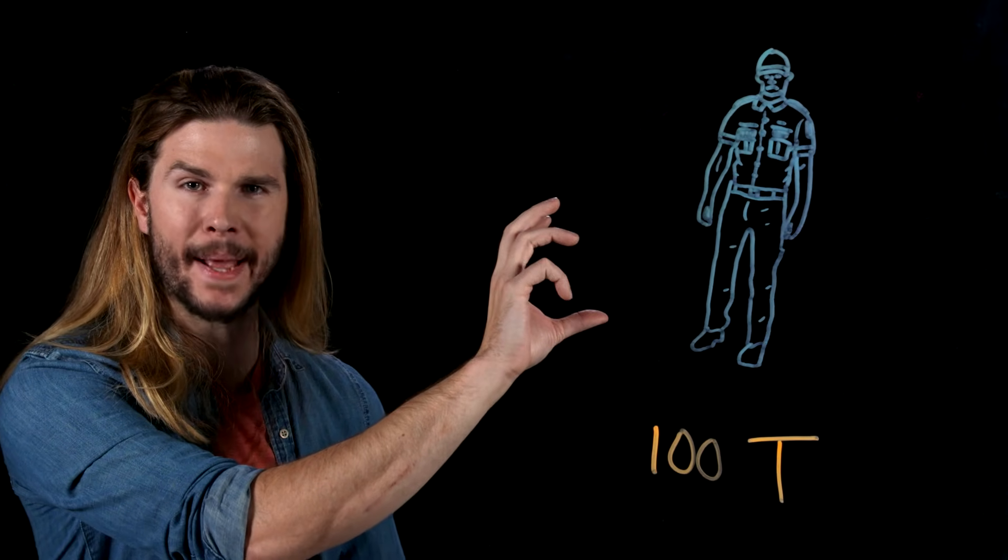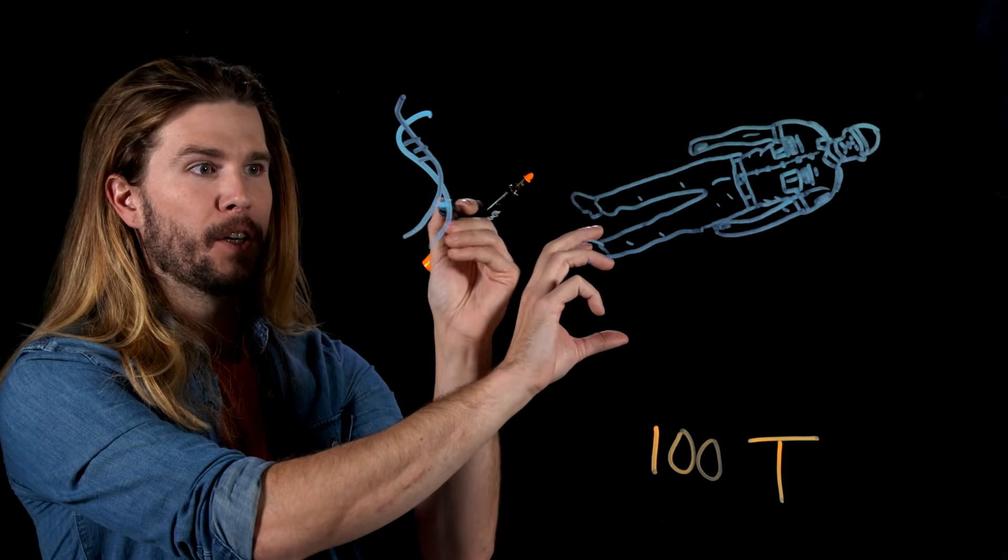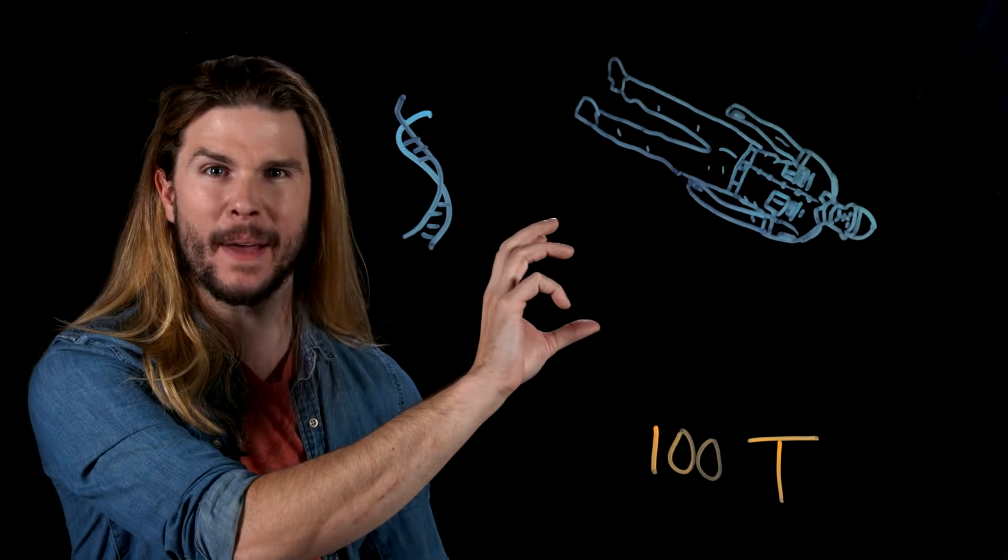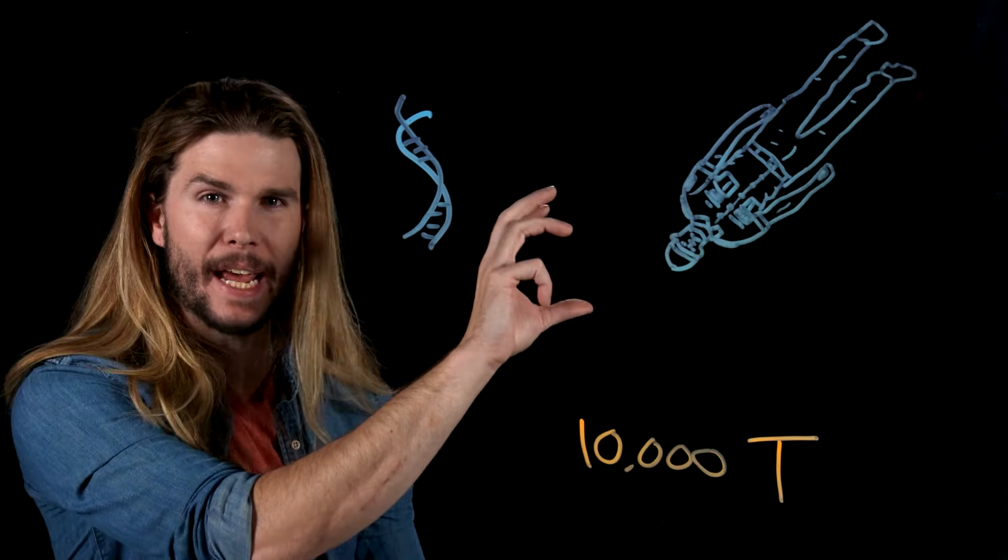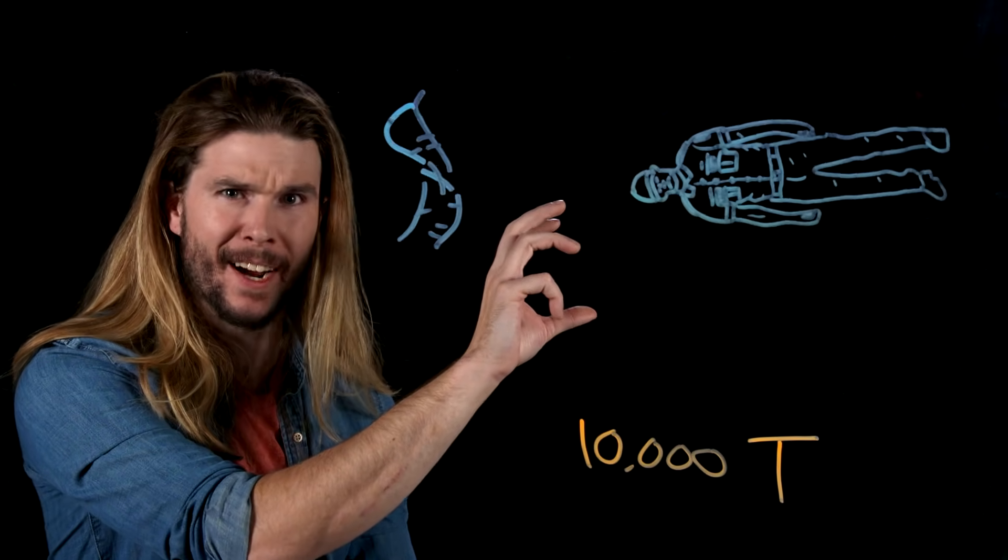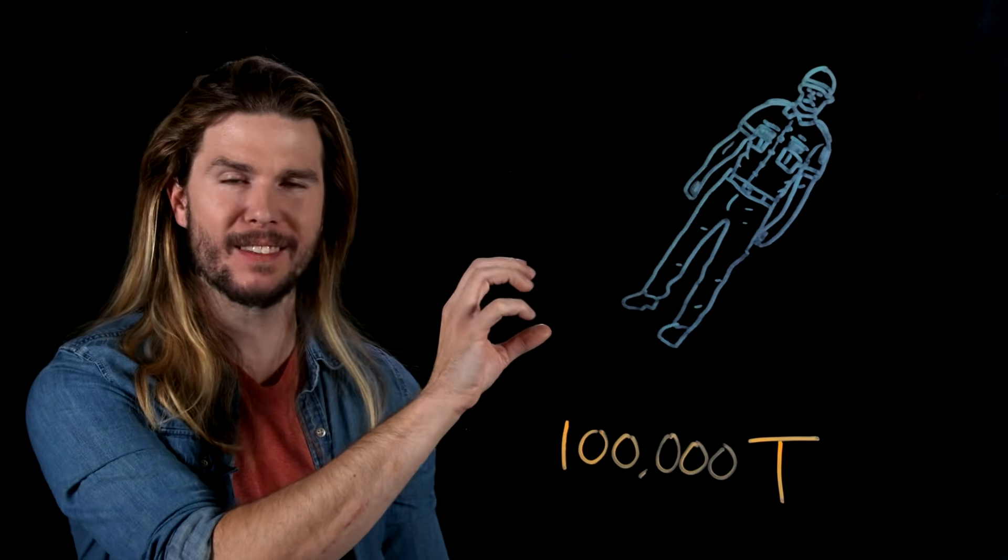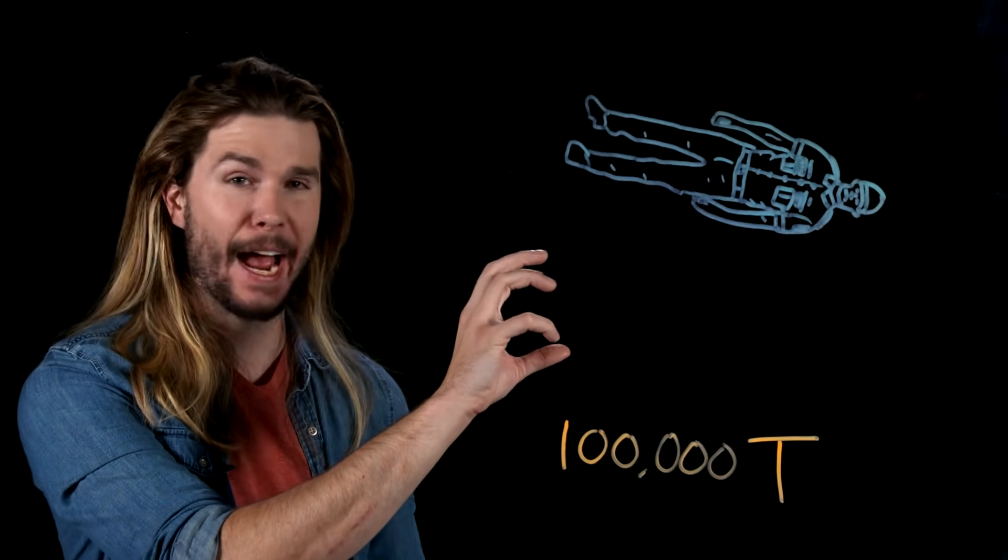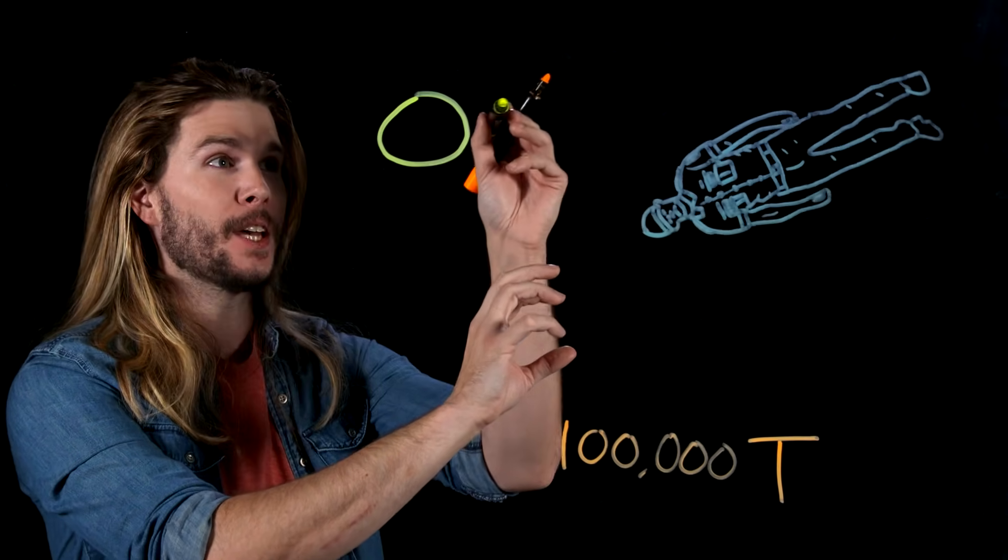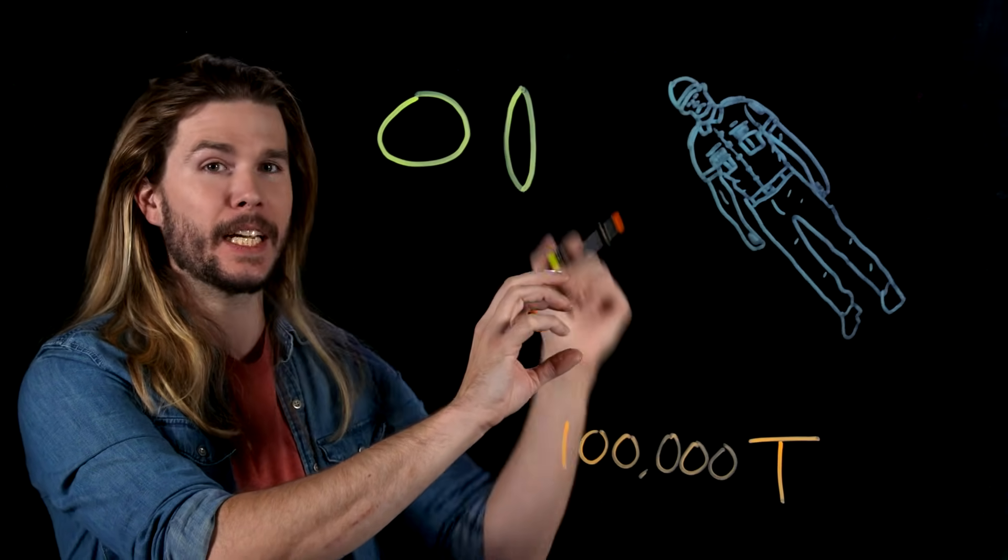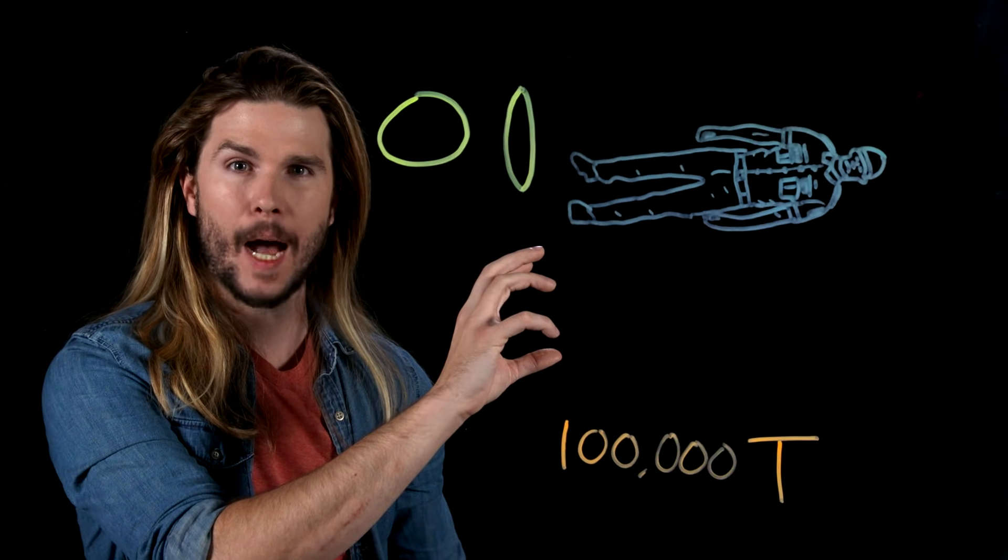At 100 Tesla of magnetic field strength, the guard's DNA may start having mutations occur inside of it as the magnetic field interacts with it on a molecular level. Oh, and he might have a heart attack. At 10,000 Tesla, his DNA unwinds. At 100,000 Tesla of magnetic field strength, I still have not separated the iron from the guard's blood. I have, however, started to change the shape of his atoms from something like this to something that looks more like a needle structure. And now all of the chemistry that happens in his body stops working the same way.